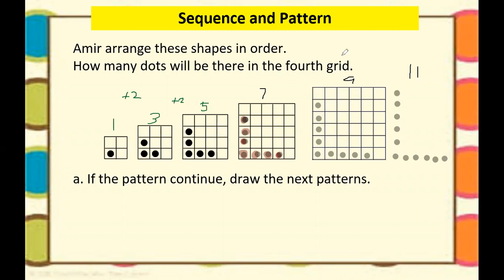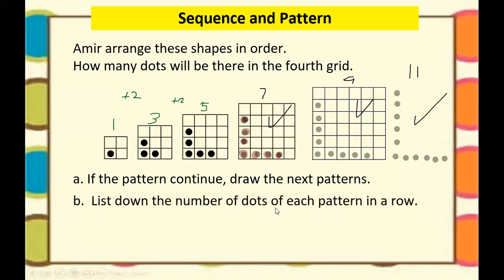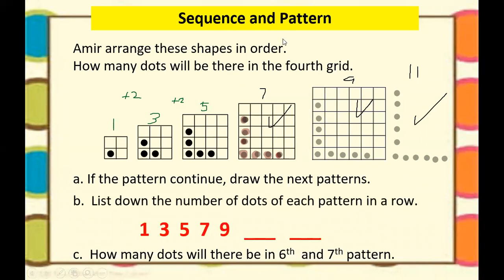So if the pattern continues, draw the next pattern. We have already completed the pattern that we need. Now let's list down the number of dots of each pattern in a row. We have started with one, three, five, seven, nine. What will be the next? Yes — 11. So we will have the next one: 11. And it will be 13. So this is the sixth and the seventh term. Simple as that.